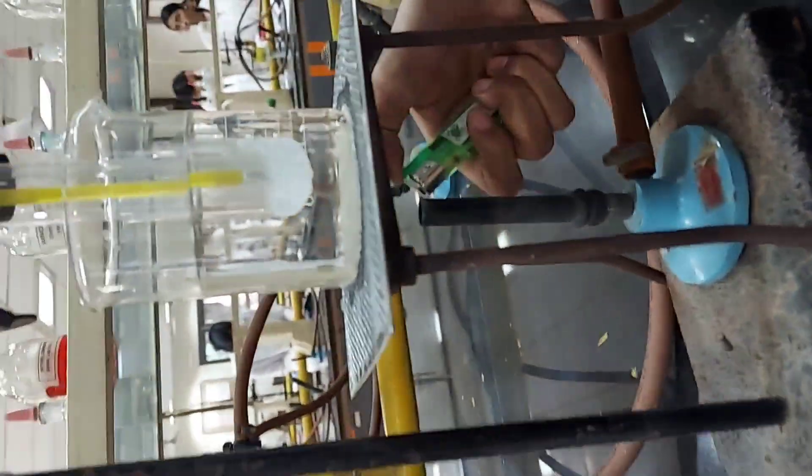Basically, we are removing the turbidity by heating. When the turbidity disappears, we note down that temperature and remove the burner. After that, when the solution cools down, it again becomes turbid and we note down that temperature.